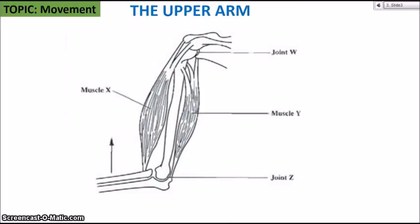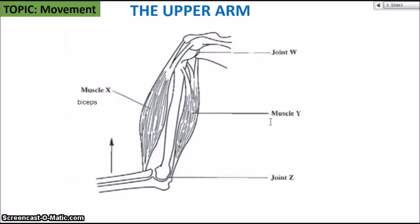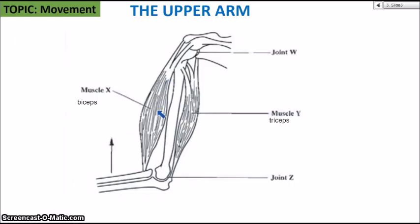Sticking to the topic of movement, we're going to look at the upper arm, particularly focusing on the joints and muscles. Muscle X is pointing at the biceps. When the biceps contracts, that causes the arm to lift — so when you're bending or flexing your arm, the biceps contracts while the triceps relaxes. When you're extending your arm, the triceps contracts and the biceps relaxes. These muscles work antagonistically, meaning they act opposite to each other — when one is contracting, the other is relaxing.